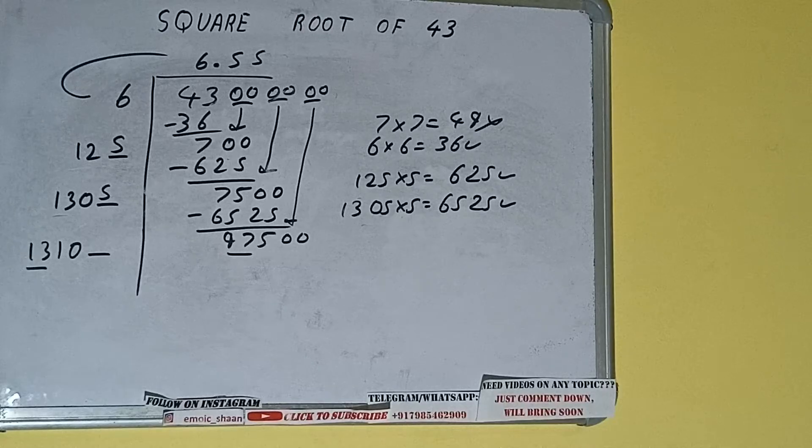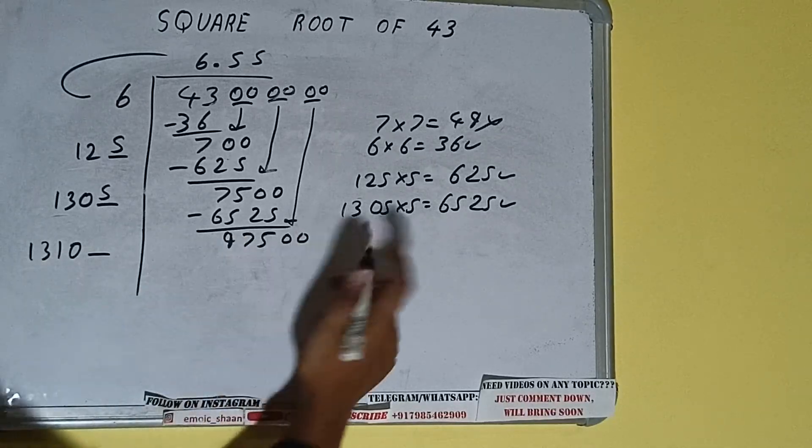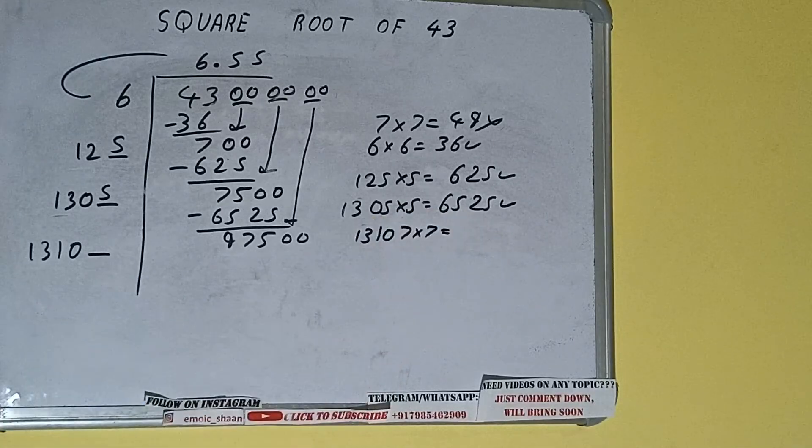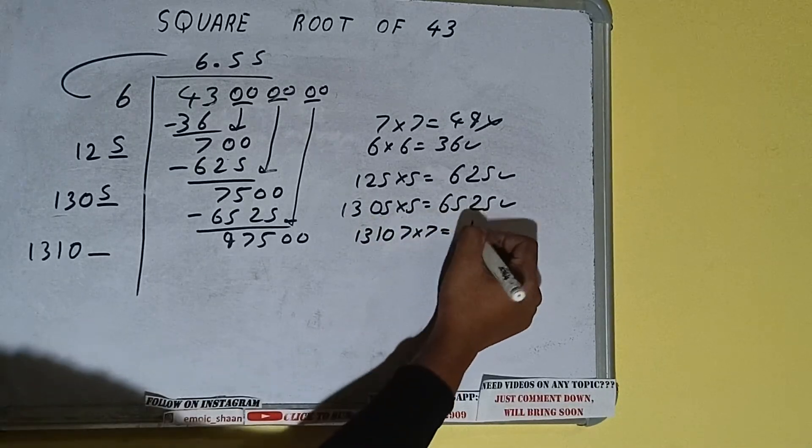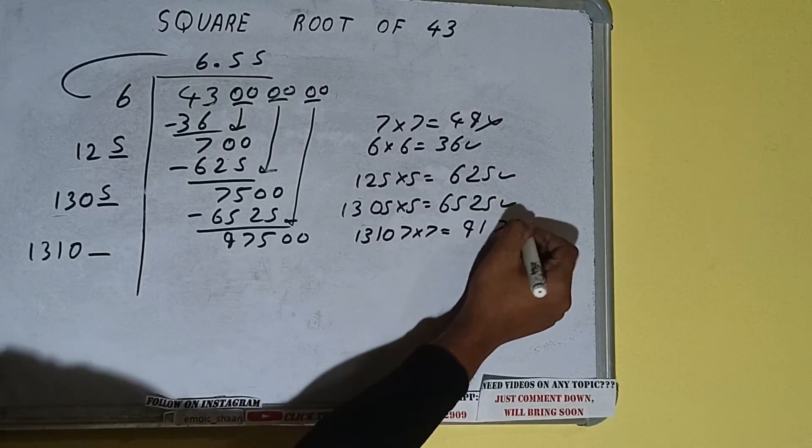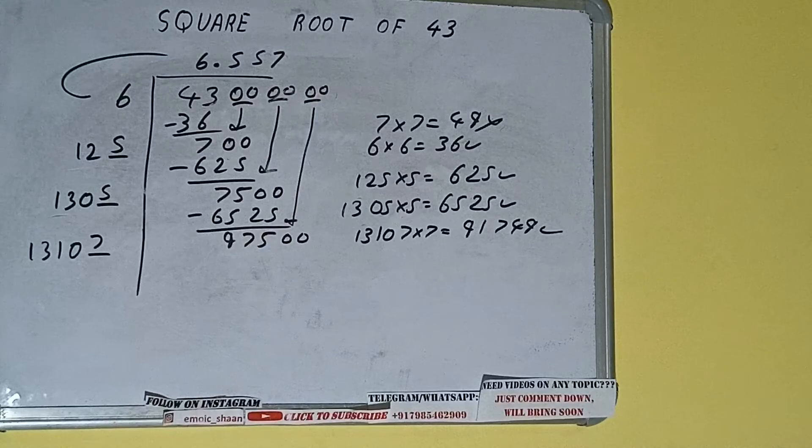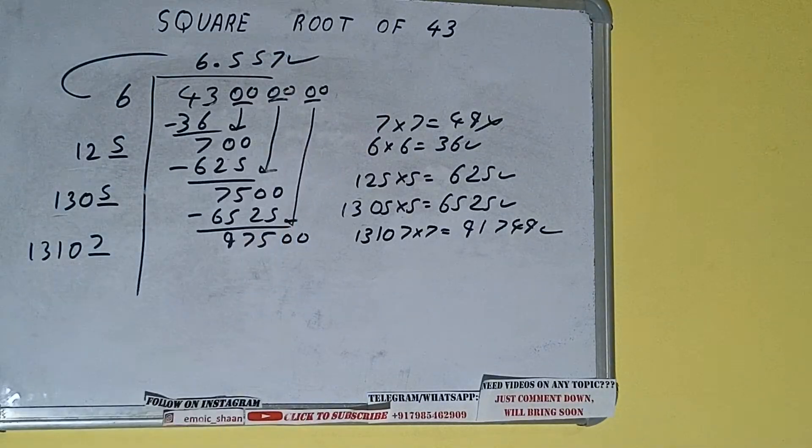Now compare this 13 and 97. So 13 times 7 is 91, so we can try 7 times 13107 into 7. We can try and we'll be having 91749, which is good to take.